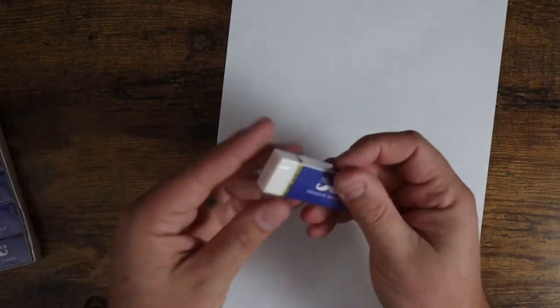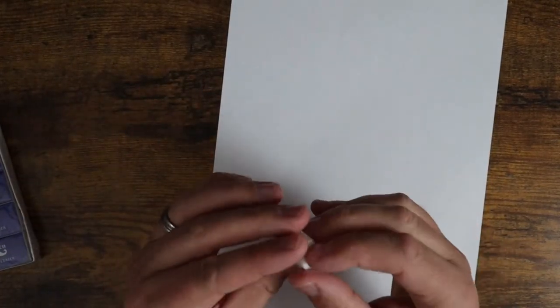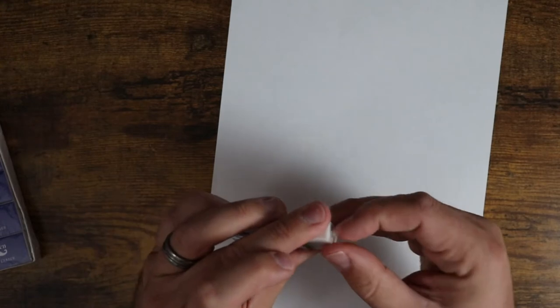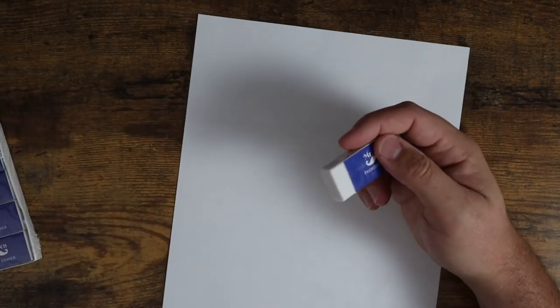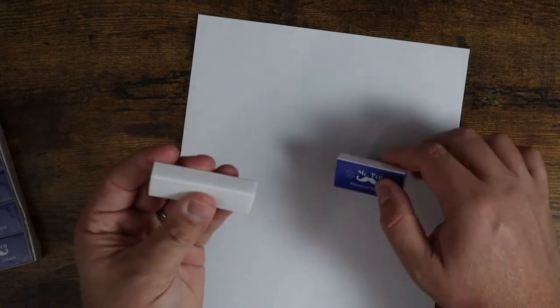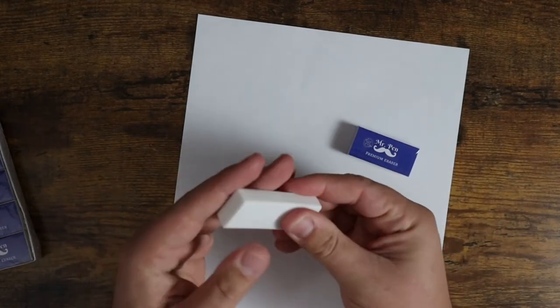They come individually wrapped just like this. So they got this individual wrapper here. They're a soft rubber, so they're not like that kind of pink rubber that you're going to find in old school erasers. They're more like magic eraser-y, a softer rubberized material.